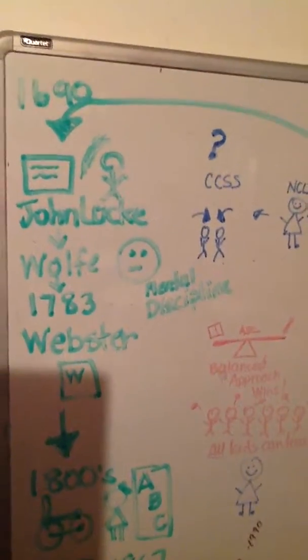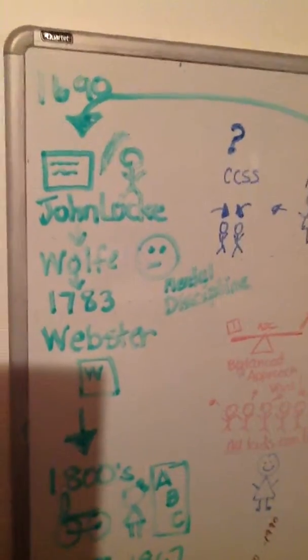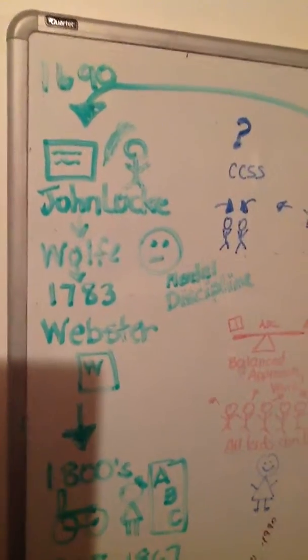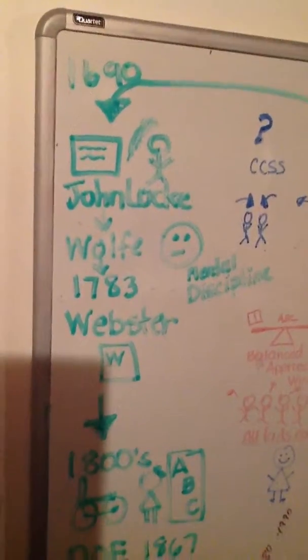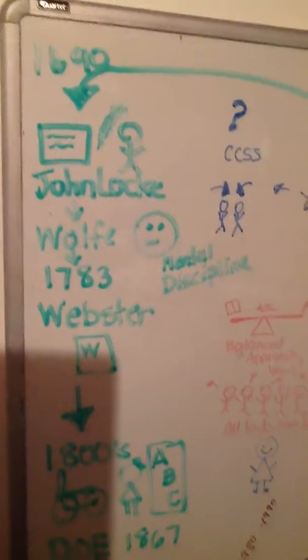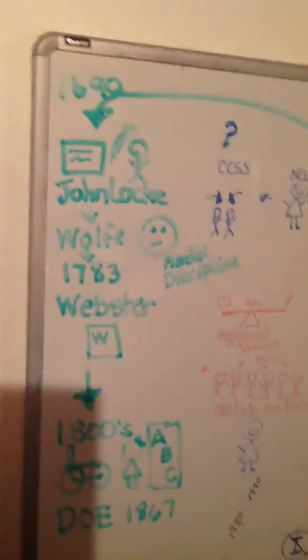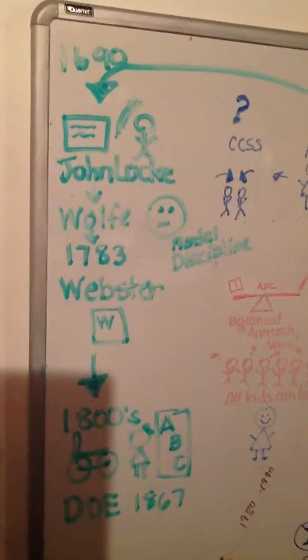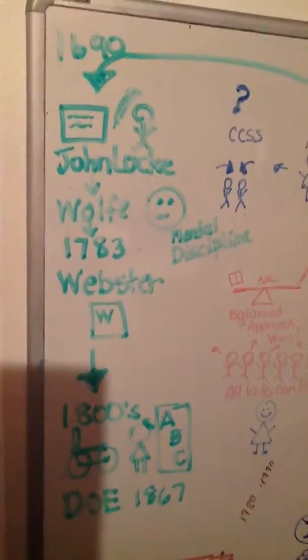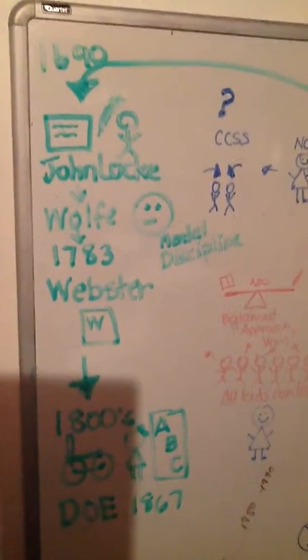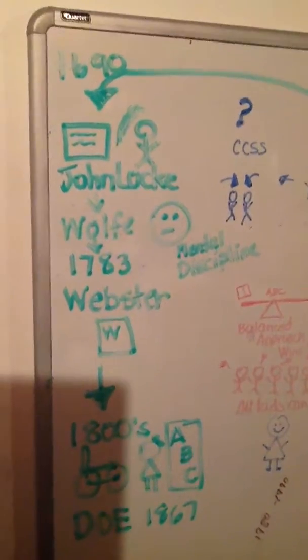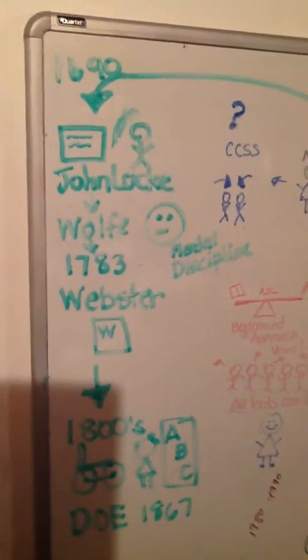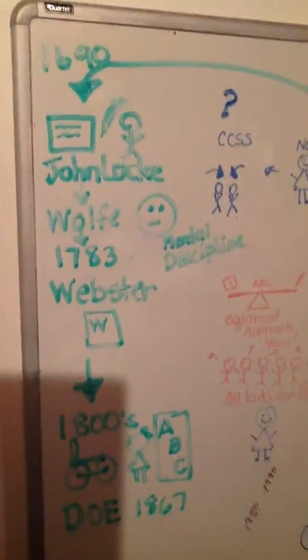Then there was Wolf. Wolf did some research on the mind and he said that the mind was best developed through mental discipline, and he believed that we needed to do basic skills first and then we could do the abstract, which we see later on by some more researchers. I put the little face there with the straight line for mental discipline.